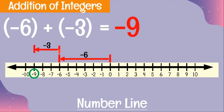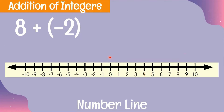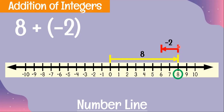Example 3: 8 plus negative 2. Again, start at zero. Since we have positive 8, we use a yellow arrow — that means 8 units to the right. Plus negative 2 means we use a red arrow, so 2 units to the left. Therefore, we have 6, and 8 plus negative 2 is equal to 6.